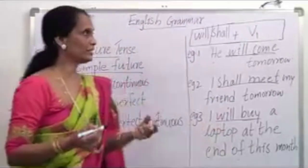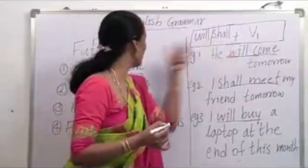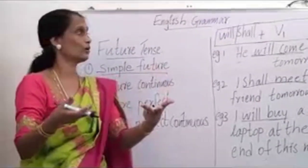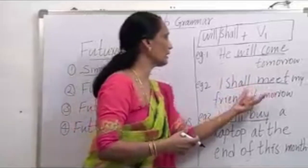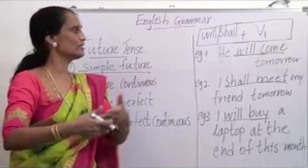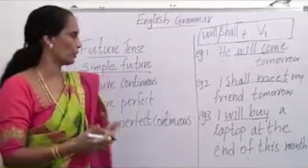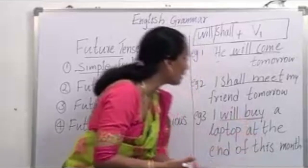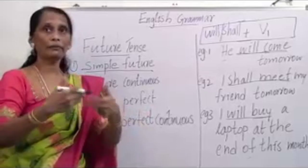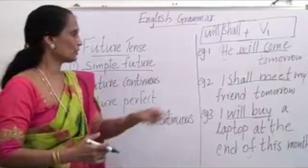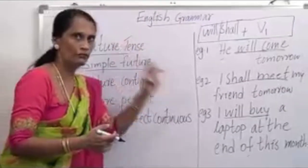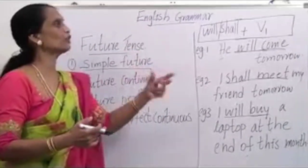In the first example, 'He will come tomorrow' expresses a future event. 'I shall meet my friend tomorrow' means the action is going to happen tomorrow. 'I will buy a laptop at the end of this month' means at this month's ending I am going to buy a laptop. All these examples are expressing a future event, so simple future is always used for expressing future events.